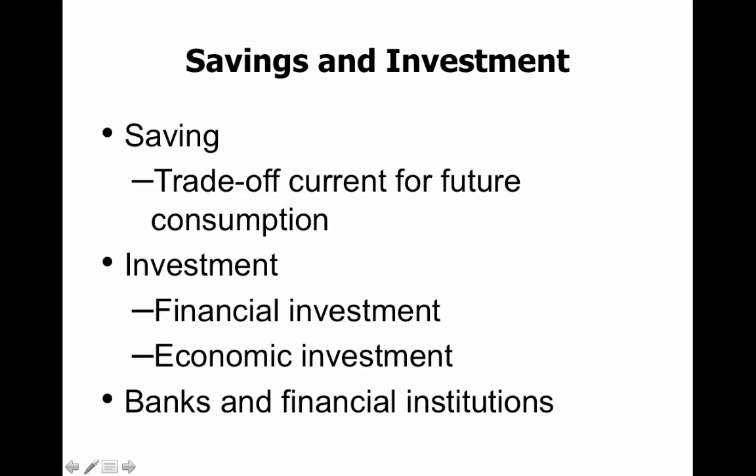Saving and investment are important to how economies function. Saving is really just buying future consumption — instead of spending today, we save and buy future consumption. Investment is different: there's financial investment, like buying stocks and bonds, but economists typically talk about economic investment, which means purchasing equipment or something that allows a business to produce more — buying raw materials, that kind of thing. Banks are going to be crucial in this, and understanding the roles of banking and financial institutions is very important in macroeconomics.